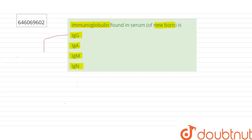Option number one: immunoglobulin G is a type of antibody representing approximately 75 percent of serum antibodies in humans. It is the most common type of antibody found in blood circulation.